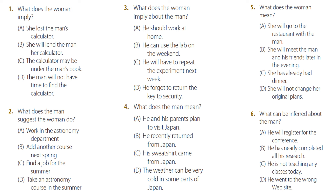Number two. 'I really want to take astronomy, but my course load this spring is too heavy already.' 'The summer session might be a good idea, since you'll be working on campus anyway.' What does the man suggest the woman do?